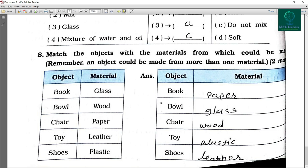Now chair. Actually chair is made from wood as well as plastic also. Now the toys. Toys are made from plastics as well as wood. Now shoes are made from leather. So students you can understand better.